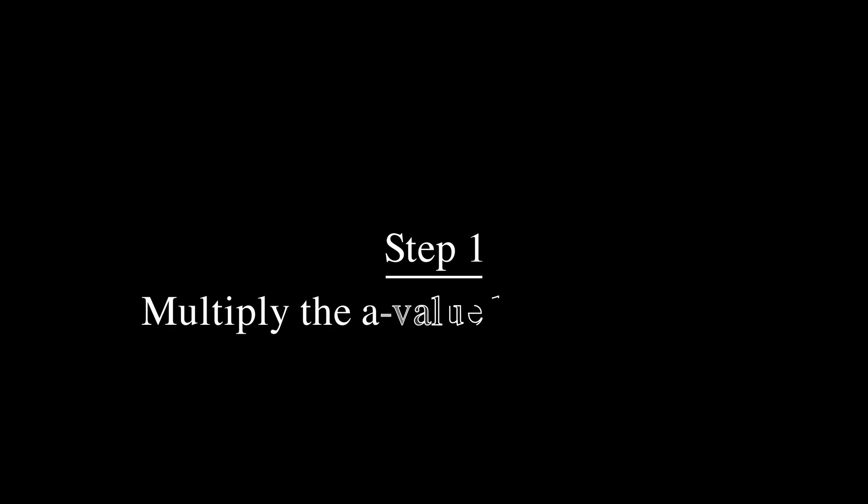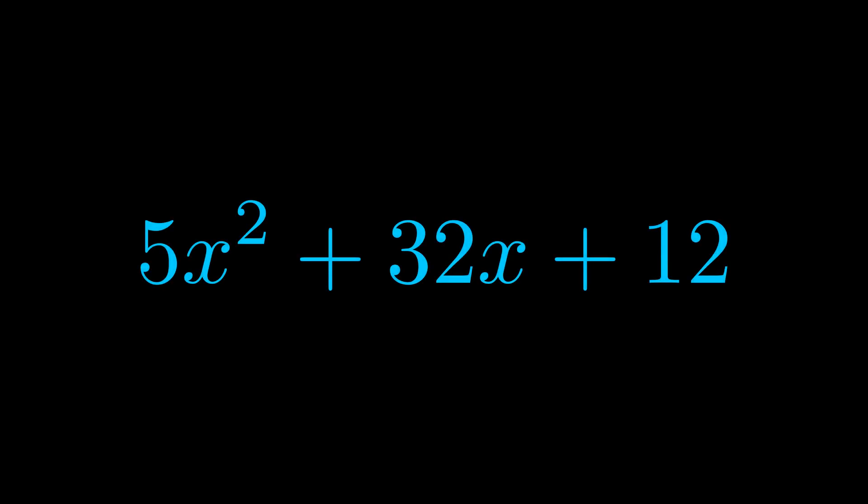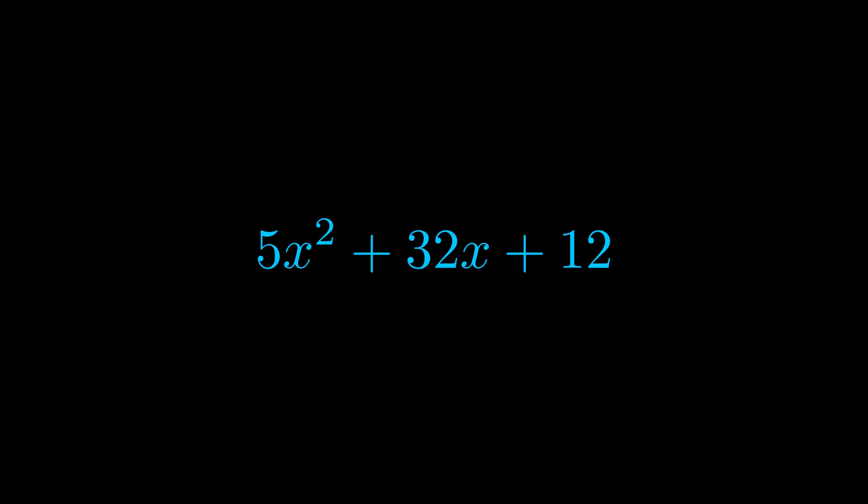Step one when factoring an equation of this form is to multiply the a value by the c value. Here we can see that our a value is the coefficient on the x squared term and our c value is the constant term.